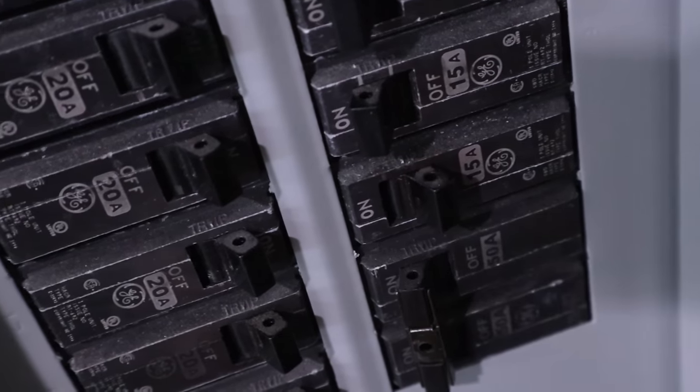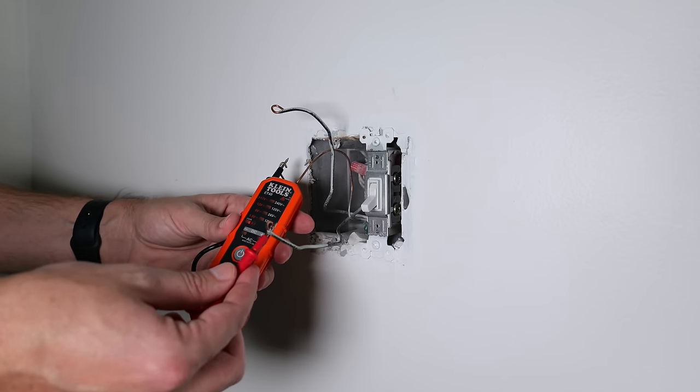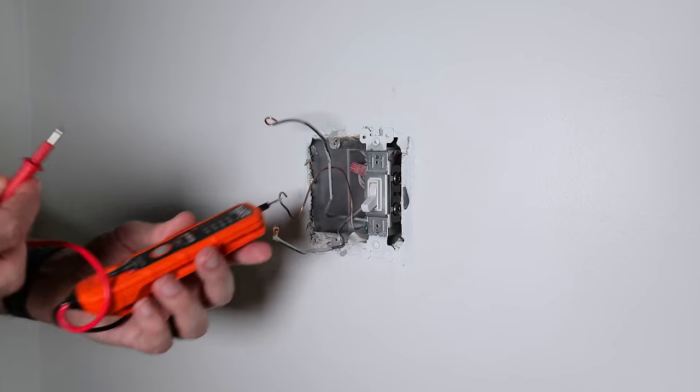So now I'm going to turn the circuit breaker back off. Now that circuit breaker is back off, I'm just going to use my voltage detector again and make sure that there is in fact no power going to this. All right, so we're good.